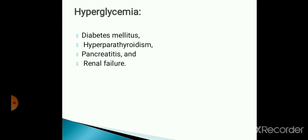High level of glucose in blood is termed as hyperglycemia. It is observed in diabetes mellitus, hyperparathyroidism, pancreatitis, and renal failure.